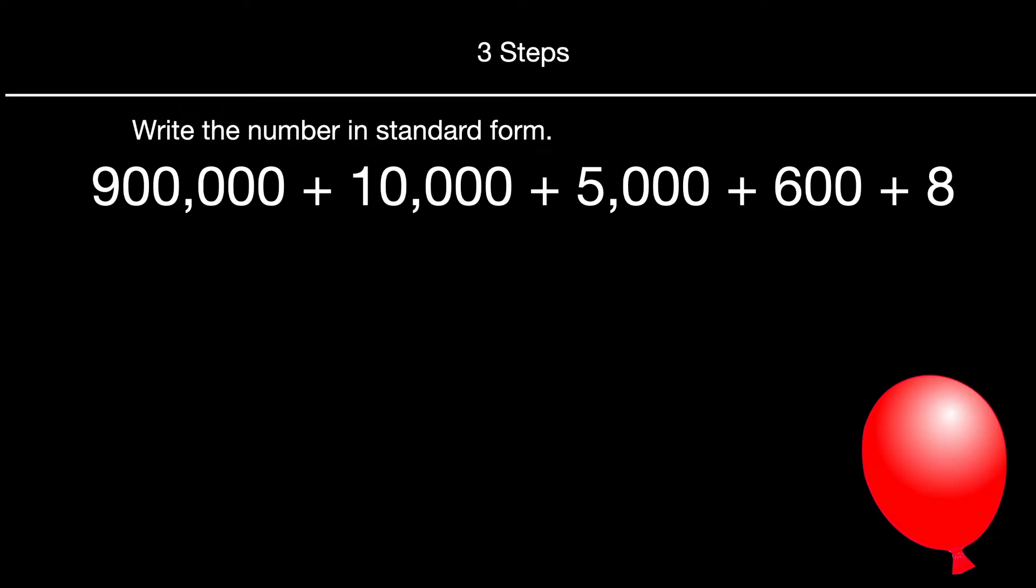Okay, this is different. Write the number in standard form. Right now that number that you're looking at, that's already in expanded form. Our job is to go from expanded form to standard form. When you do this, make sure that the number of digits in your answer is equal to the number of digits in the greatest number. Now, let me show you what that means. The greatest number for this problem is 900,000. How many digits do you see for that? I'm seeing six digits.